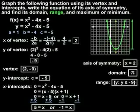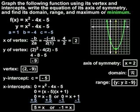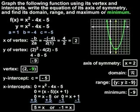Finally, we're asked to find the maximum or minimum value of the function. Since this parabola opens upward, the vertex is the lowest point on the parabola, so the parabola has a minimum value at its vertex. To find the minimum value, we use the y-coordinate of the vertex, which is negative 9. So this parabola has a minimum of negative 9.